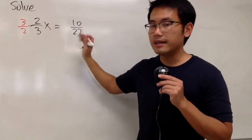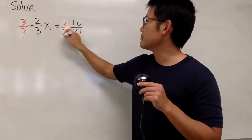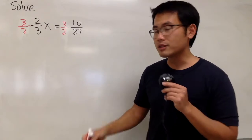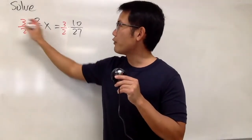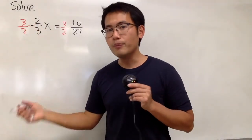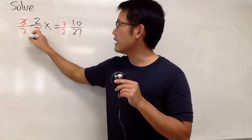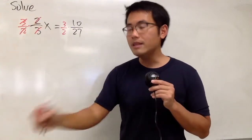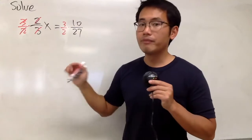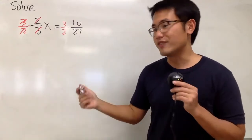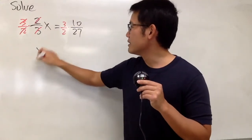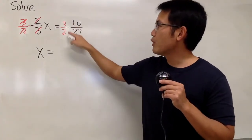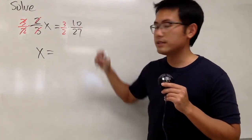And again, we do the same thing on the other side, so we multiply this by 3 over 2 like this. The beauty of doing this is that when we multiply fractions, we can actually cross-cancel. You see, 3 and 3 cancel, 2 and 2 cancel. So this right here is just going to give us 1x — the x is by itself now, which is very nice. So we have x is equal to... and then for the second part right here, we have 3 over 2 times 10 over 27.